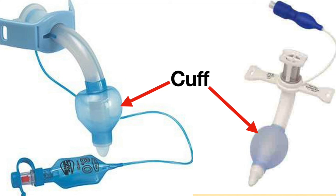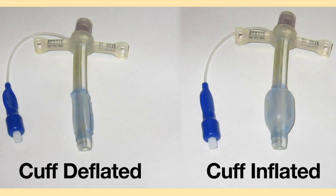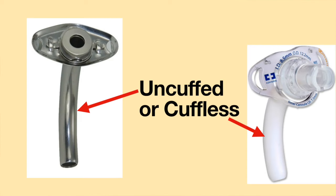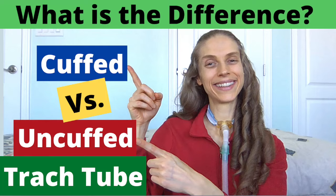On some tracheostomy tubes, there is a balloon-like feature on the distal end of the tracheostomy tube. This is called a cuff. The cuff can be inflated or deflated. If the tracheostomy tube does not have a cuff, it is called an uncuffed or cuffless tracheostomy tube. For more information about cuffed versus cuffless tracheostomy tubes, please see the video "Cuffed versus uncuffed tracheostomy tube: What is the difference?"